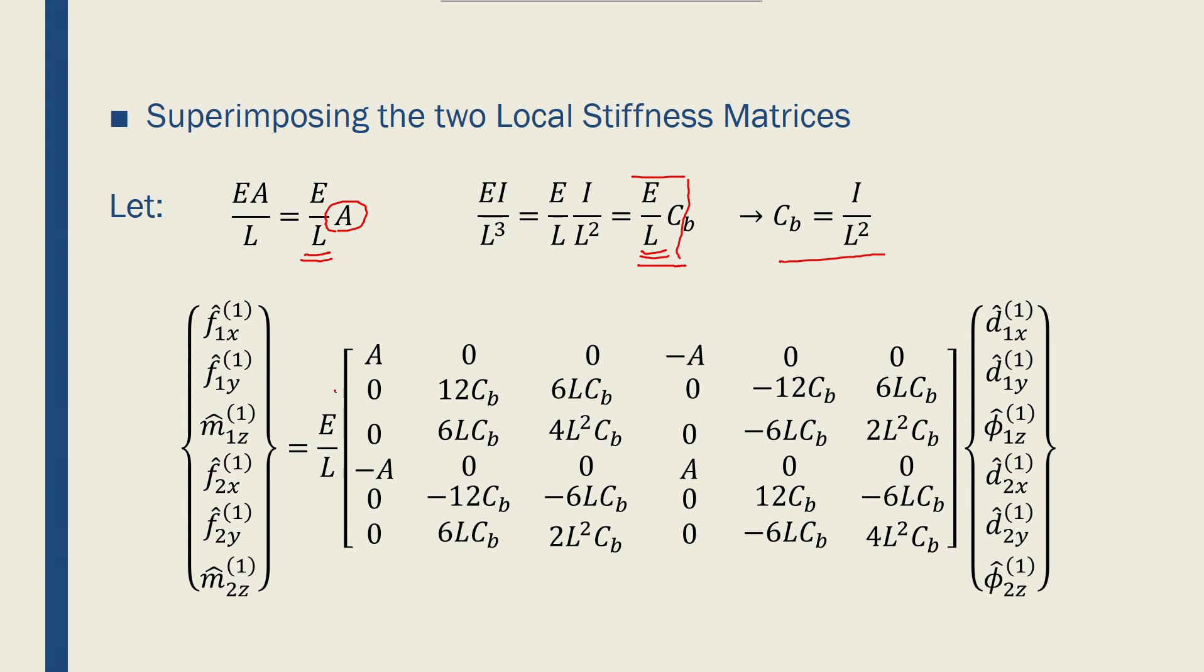Now, using the two stiffness matrices that I found before, one for the truss and one for the beam, and since they were both 6 by 6, I can add them together and find this stiffness matrix, which is 6 by 6 for a frame element.